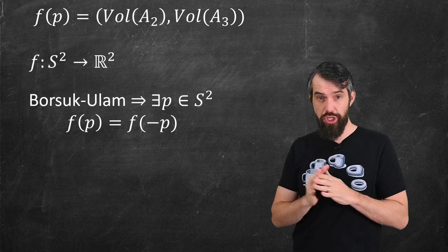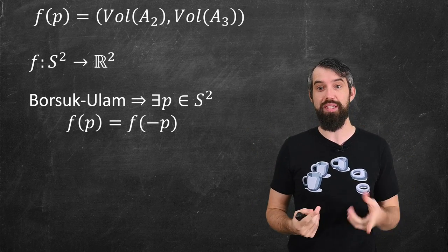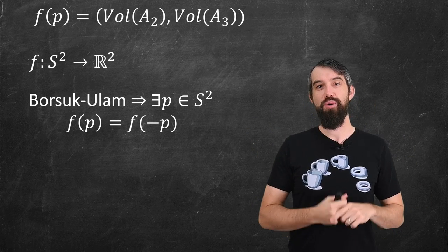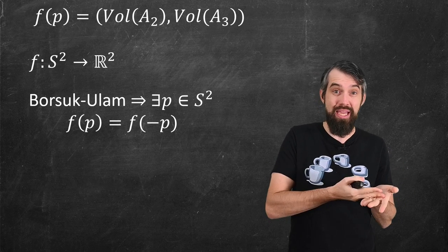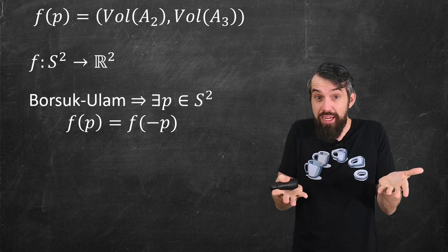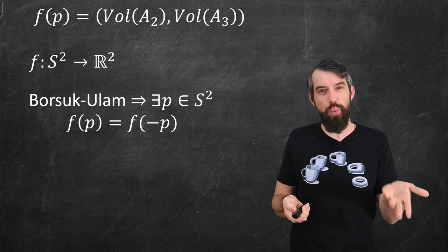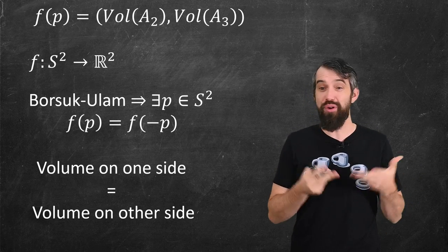So returning to our function and the application of Borsuk-Ulam that says there exists this point where f(p) is f(minus p). But now because I know that the difference between p and minus p is the same plane just oriented in the reverse way, basically what I'm saying is that for each component, the volume on one side is equal to the volume on the other side.